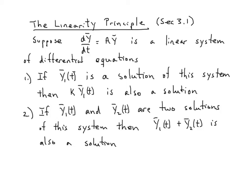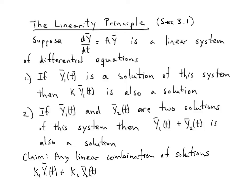The claim is, since I can multiply any solution by a scalar and add two solutions together, the real power is that any linear combination of solutions is also a solution. By linear combination I mean some scalar times one solution plus a scalar times another solution.